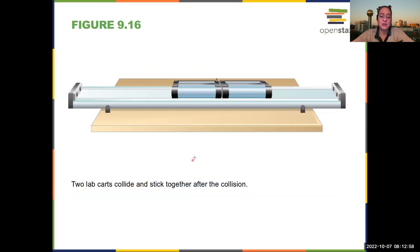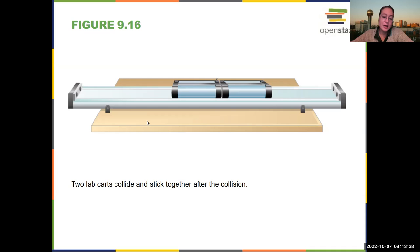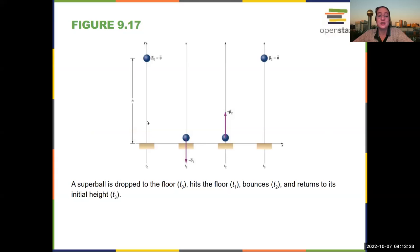Another example you're likely to run into is air carts. Air carts are great because the air reduces friction between the track and the cart, so you can often neglect friction. If you had friction, you'd have a net external force and momentum wouldn't be conserved. Two lab carts collide and stick together after the collision — one-dimensional motion — and you write your equations to find the final momentum of the system.